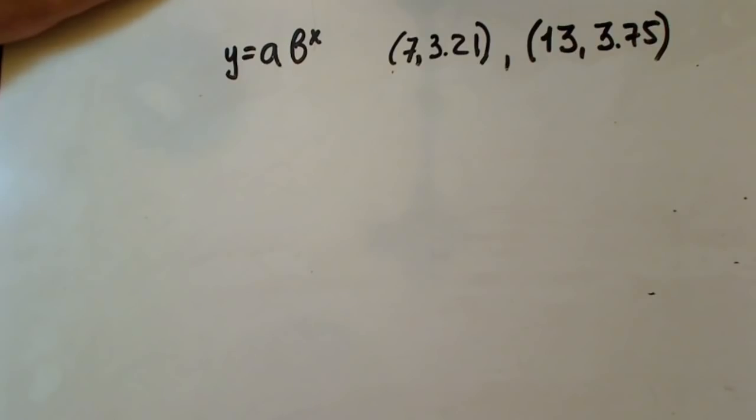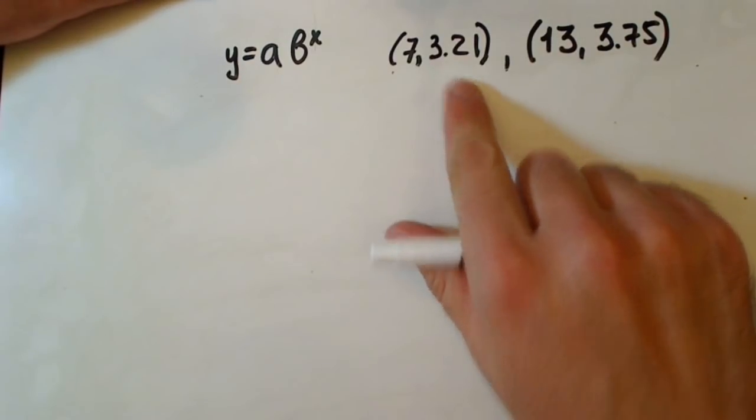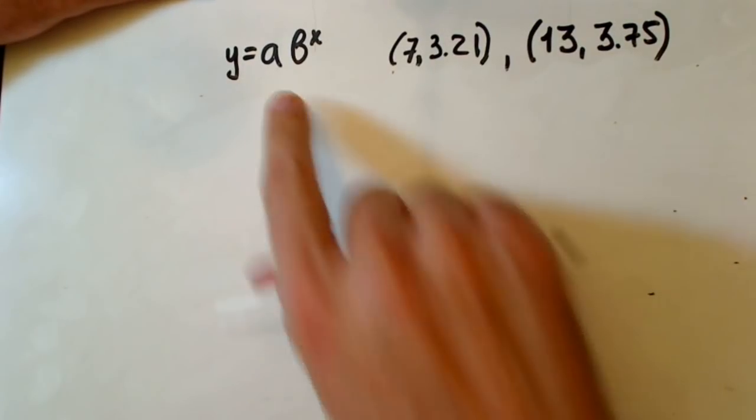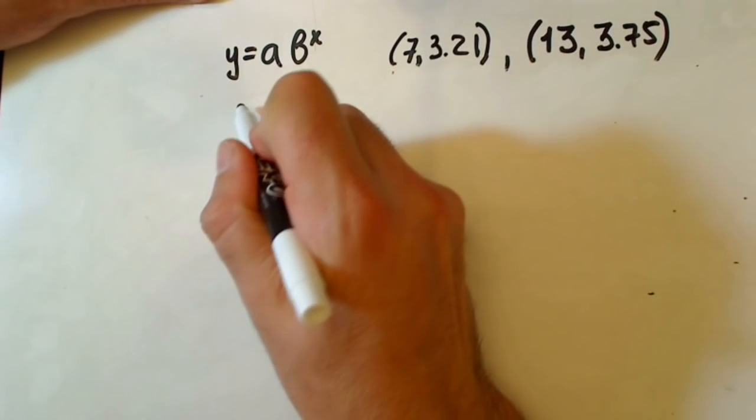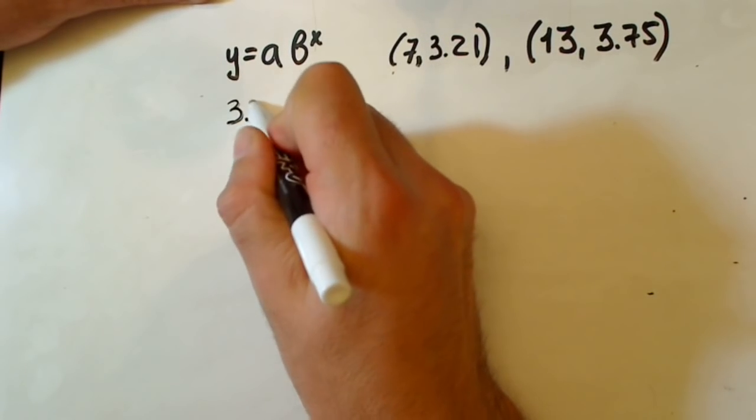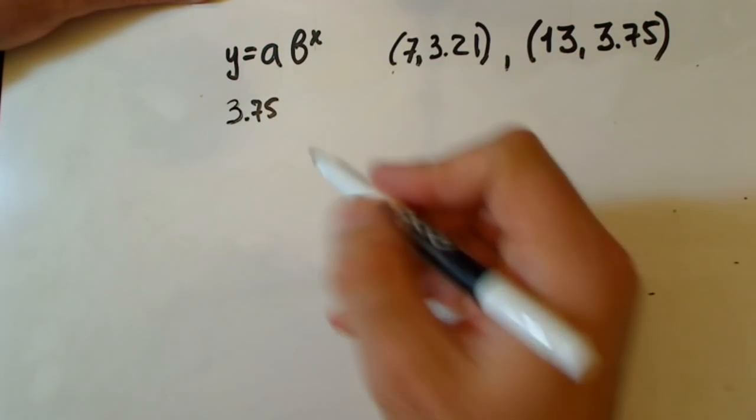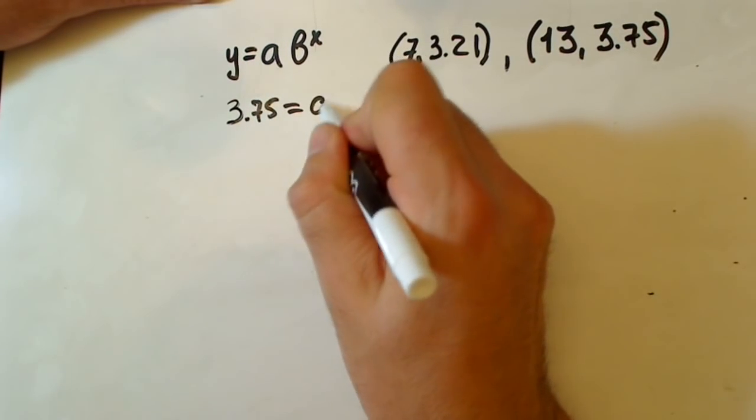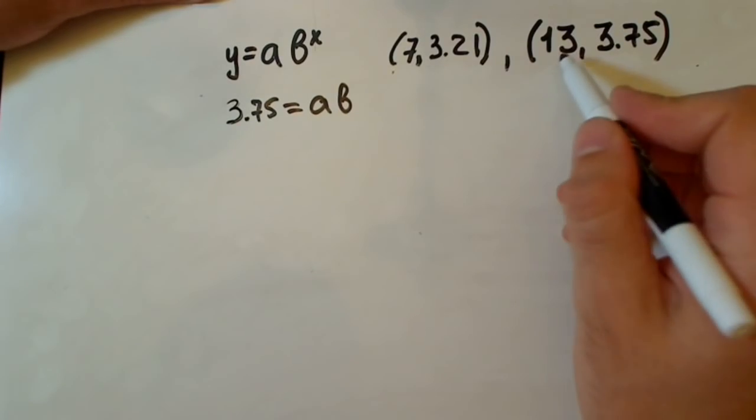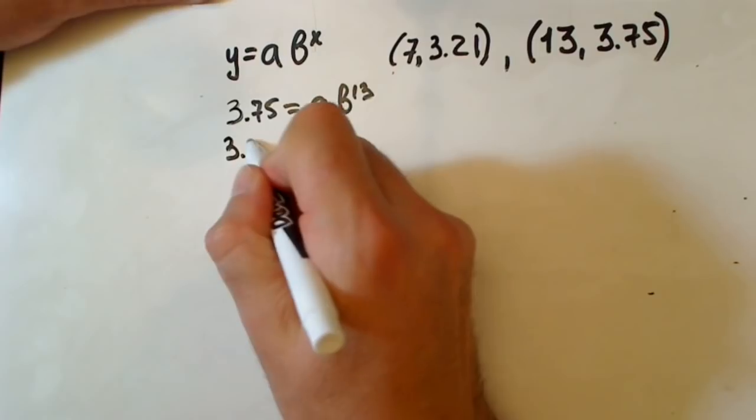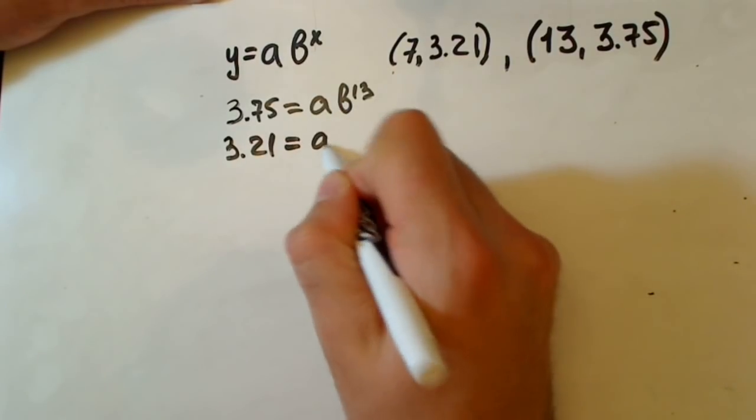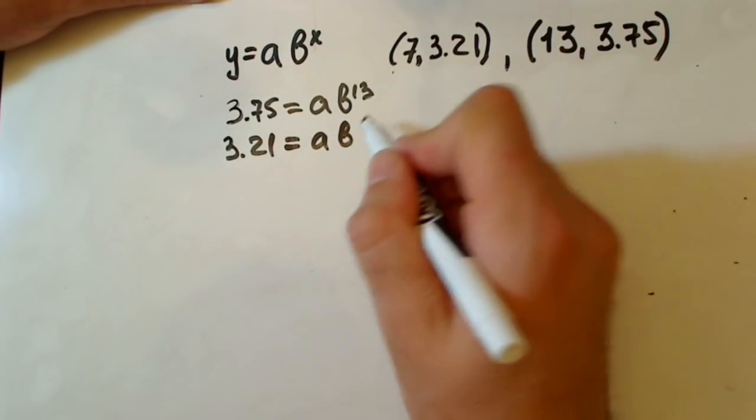First of all, what we're going to do is plug in these points in our basic function and find a couple of equations. We have 3.75 is the second point, equals ab to the x, which is 13. Second one is 3.21 equals ab to the seventh power.